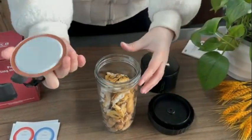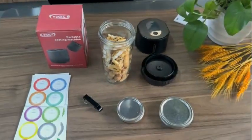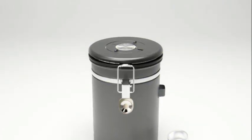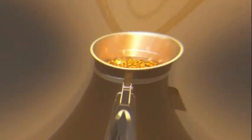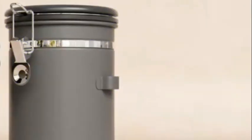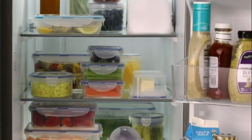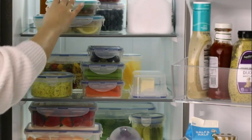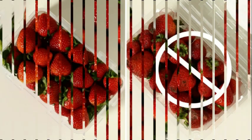One of the standout features of the OXO Good Grips Pop Container is its transparency. The transparent color allows users to easily identify the contents without the hassle of opening each container individually. This is particularly useful, as it saves time and effort, especially when dealing with a large number of containers.